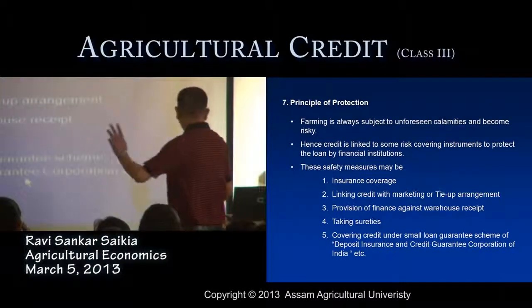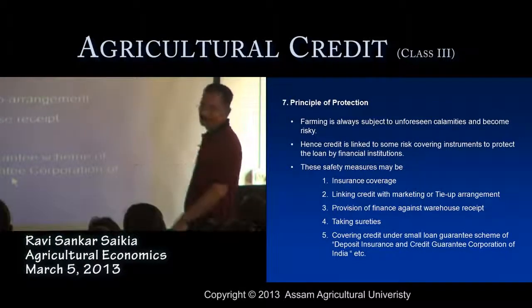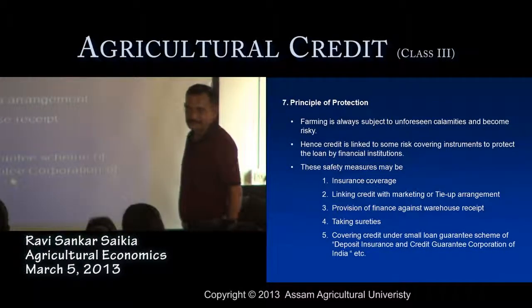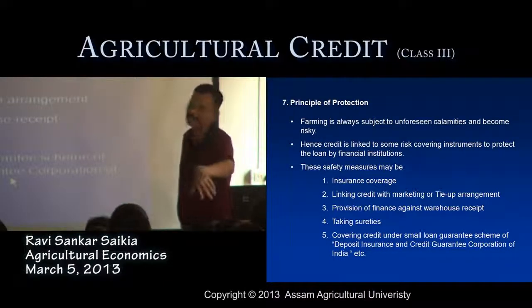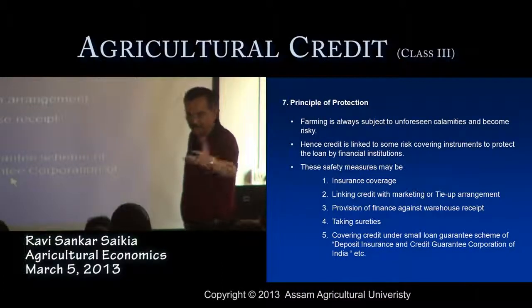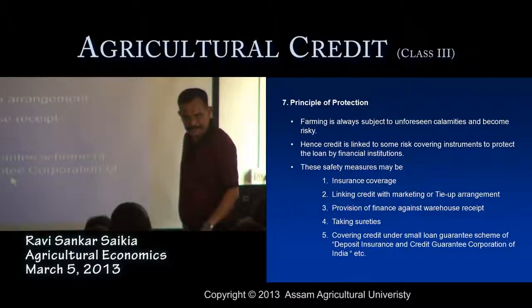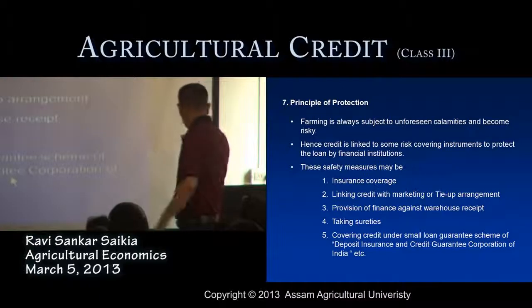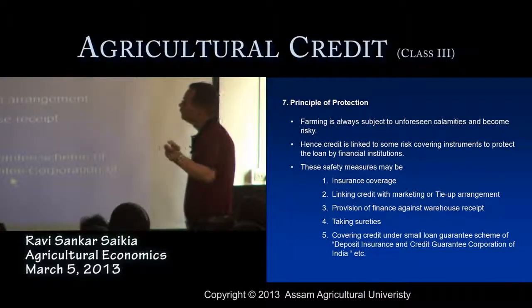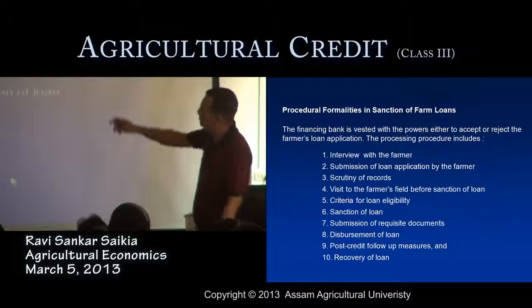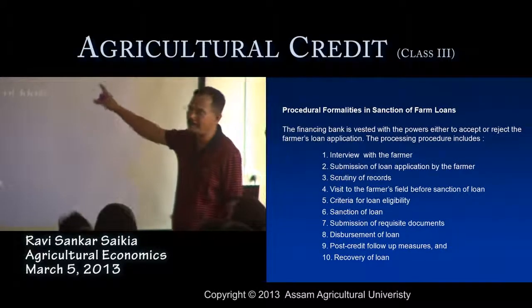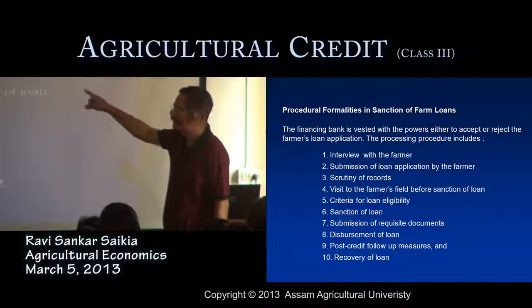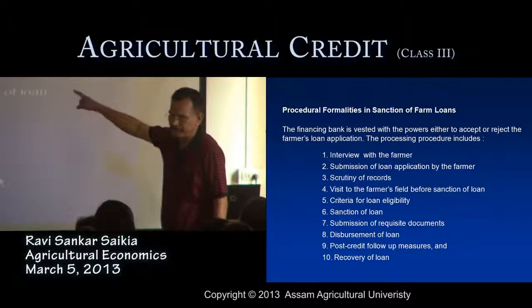These are the seven principles commonly known as the seven P's of credit for judging the economic viability of a project. Now, the procedural formalities generally followed by the banking organization before disbursement of the loan involve covering all necessary steps up to final disbursement.